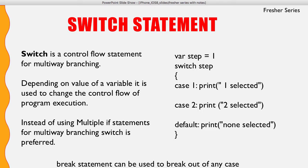Switch is a control flow statement for multi-way branching. Instead of using multiple if statements for branching, we normally prefer the switch statement. Depending on the value of a variable, it is used to change the control flow of a program execution.